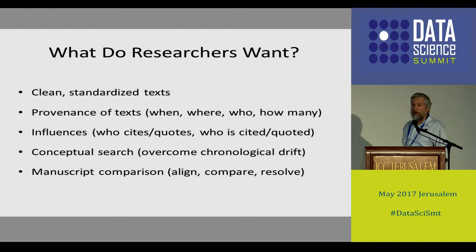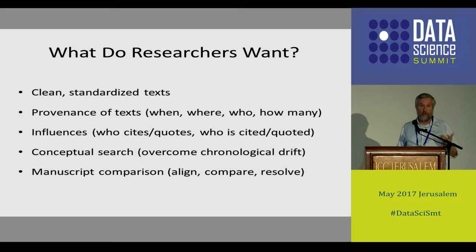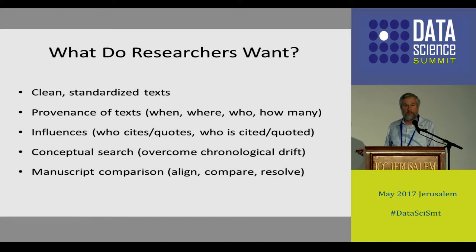There are also problems of manuscript comparison. You've got lots of different manuscripts of the same text. You'd like to align them into what's called a synoptic text, so that the same word or its substitute appear in the same column. Then you want to cluster them, figure out what the right text was, and — assuming there was an original text from which they all copied in some corrupted way — reconstruct that original text. We have more or less solved all of these problems, and I'm going to present some of the solutions.